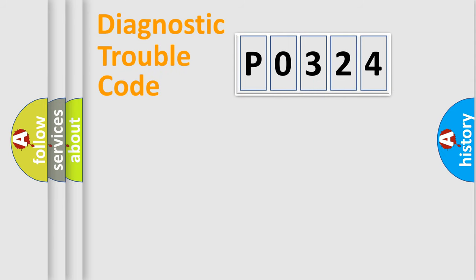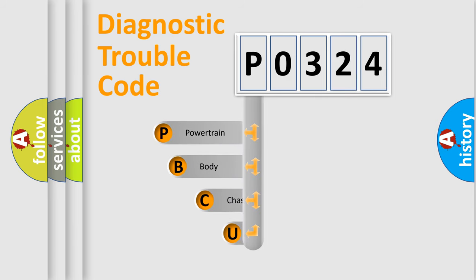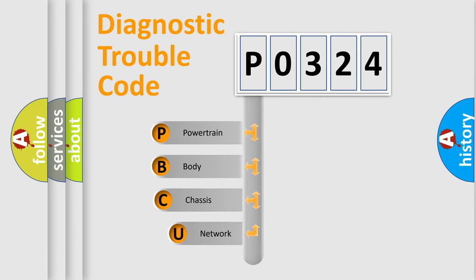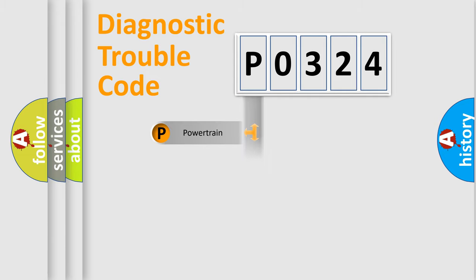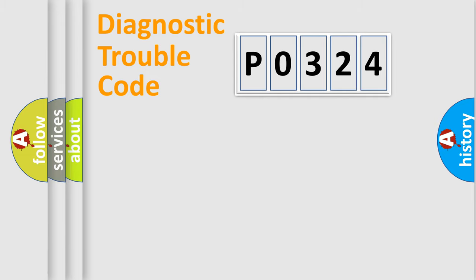First, let's look at the history of diagnostic fault code composition according to the OBD2 protocol, which is unified for all automakers since 2000. We divide the electric system of the automobile into four basic units: Powertrain, Body, Chassis, and Network.